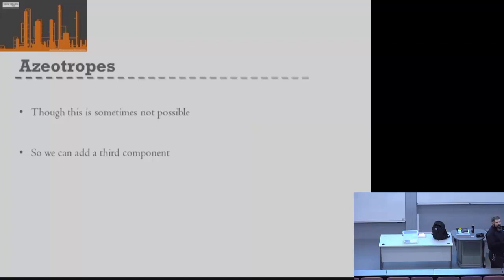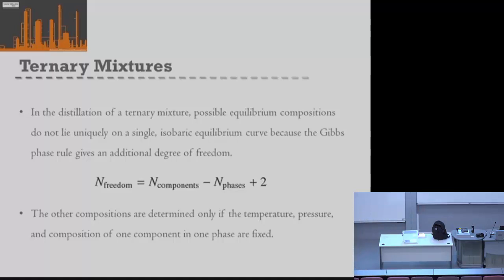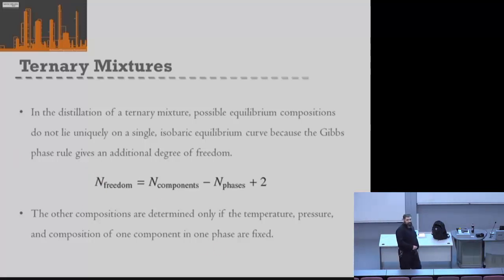The advantage of having a third component is we can potentially achieve a separation, but the disadvantage is it's now a more complex system. If we've got a ternary mixture, our equilibrium compositions don't lie on a single line — that X-Y line isn't single anymore. We have an additional degree of freedom: with three components and two phases, we've got three degrees of freedom rather than just two, so we need other information about our system to determine equilibrium.